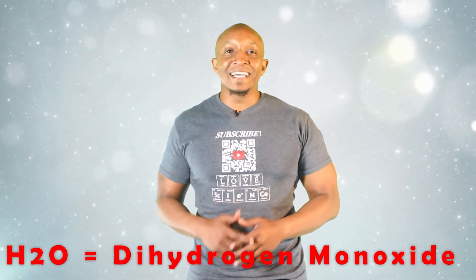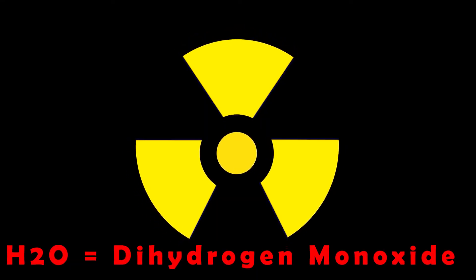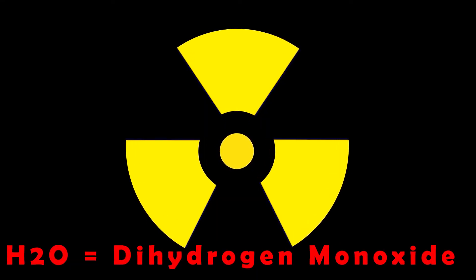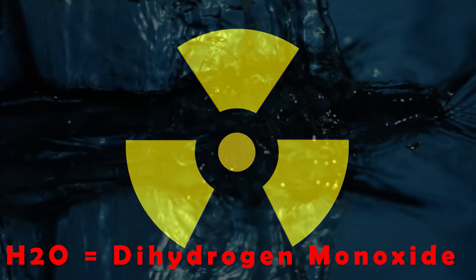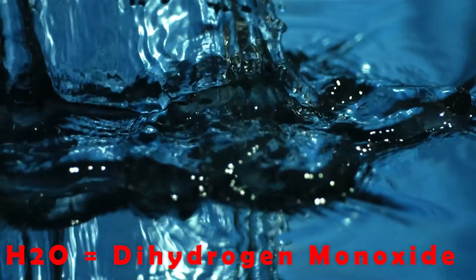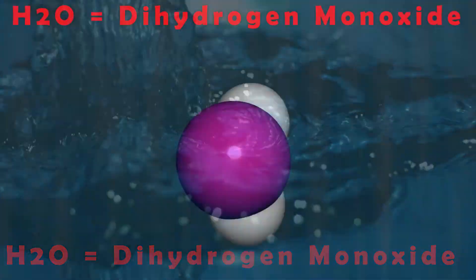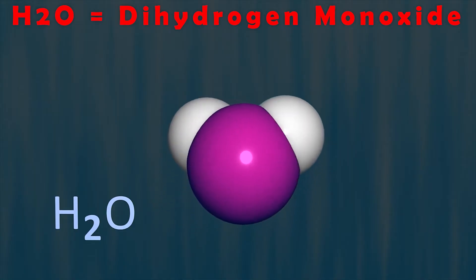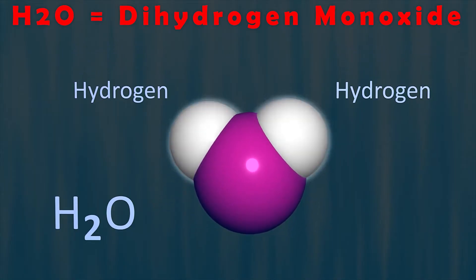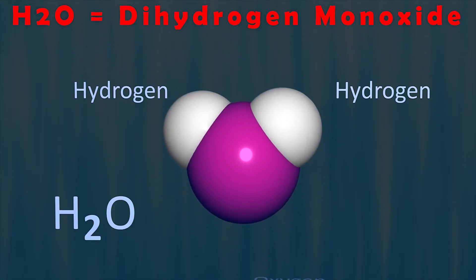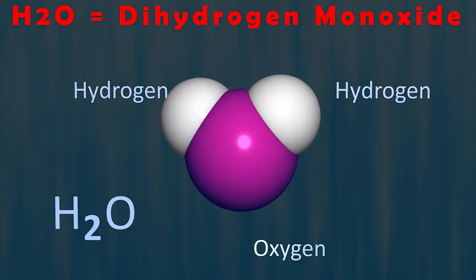The funny thing is that dihydrogen monoxide sounds like a poison or some toxic gas to most people, but it's actually just the chemical name for water. Two hydrogen atoms equals dihydrogen, and one oxygen atom equals monoxide, which gives us dihydrogen monoxide.